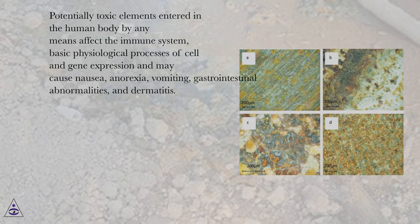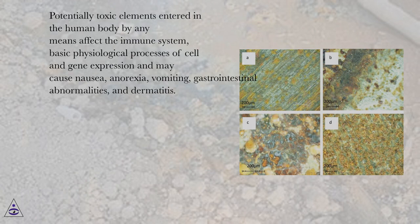Potentially toxic elements entering the human body by any means affect the immune system, basic physiological processes of the cell and gene expression, and may cause nausea, anorexia, vomiting, gastrointestinal abnormalities, and dermatitis.